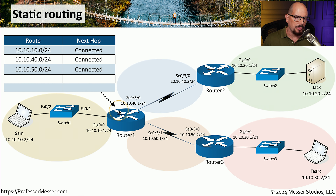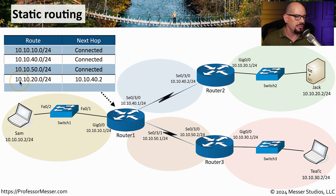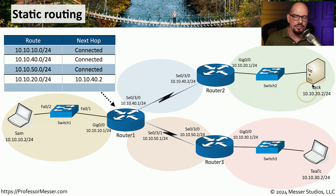So let's configure some static routes for router 1. We know that we have our three locally connected routes, but we also have these additional two routes — one that's behind router 2 and one that's behind router 3. This would be the 10.10.20 network and the 10.10.30 network. So we might SSH into router 1 and at the command line we would begin to add additional static routes. For example, we might tell router 1 that if it receives any packet with a destination IP address matching the range 10.10.20.0/24, then send that particular packet to 10.10.40.2, which is located on router 2.